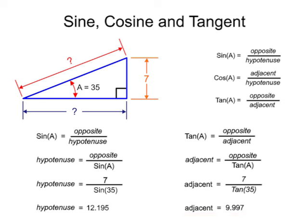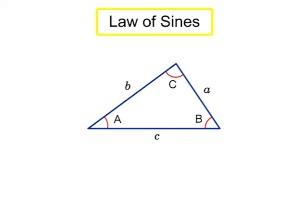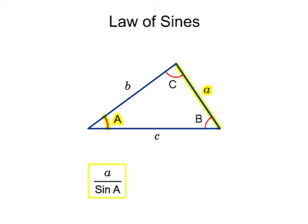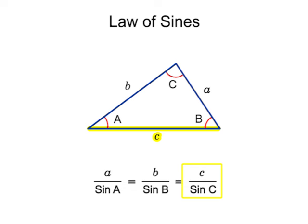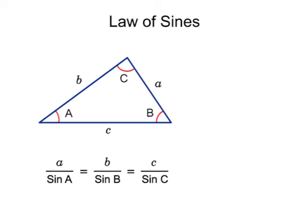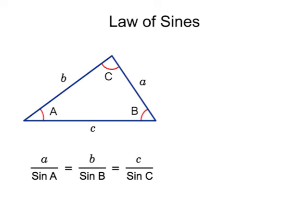Since not all triangles are right triangles, it's useful to know how the trigonometric functions sine, cosine, and tangent relate to regular triangles. The law of sines states that the side of a triangle divided by the sine of its opposite angle is equal to any other side divided by the sine of its opposite angle. So, for any given triangle, side A divided by the sine of angle A equals side B divided by the sine of angle B, which equals side C divided by the sine of angle C. If several of the values are known, we can rearrange the equations to determine the remaining unknown values.